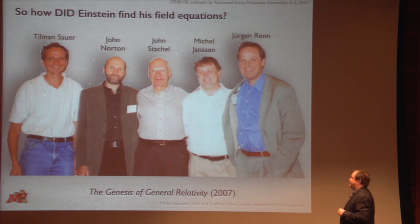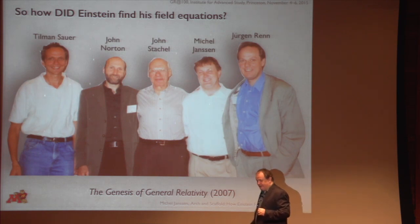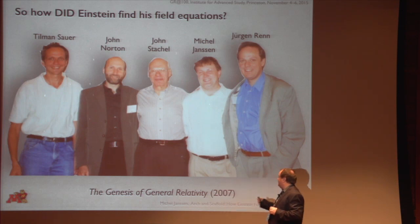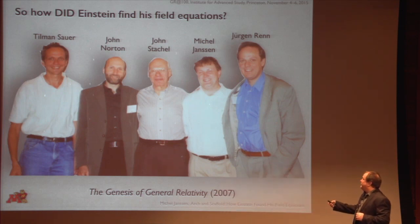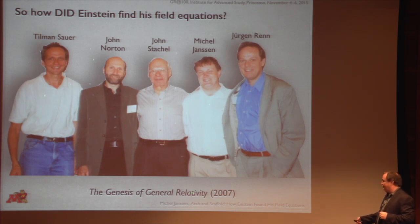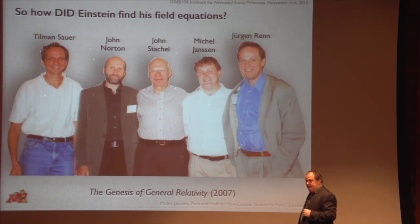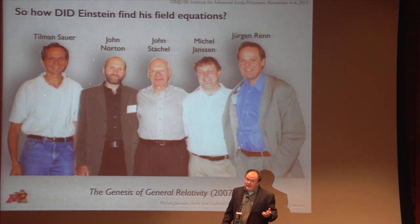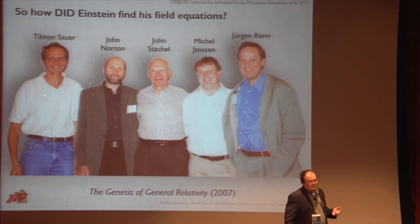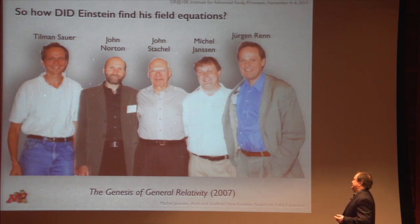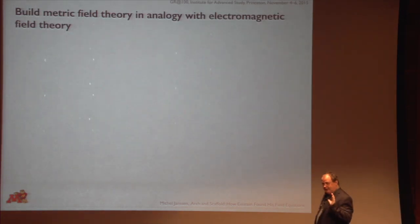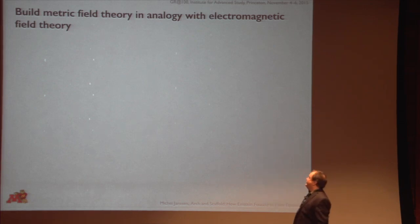So that brings us back to the question: how did Einstein find the field equations of general relativity? This is what the five of us — Tillman Sauer, John Norton, John Stachel, Jürgen Wren, and myself — set out to do in the book The Genesis of General Relativity. It took Einstein about three years to do all this; it took the five of us ten years to reconstruct what was happening. I'm going to try and give you a concise version of how this worked.